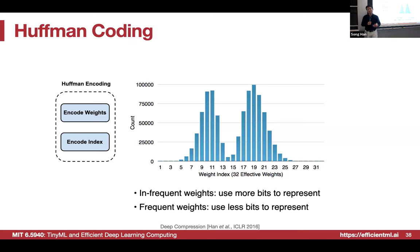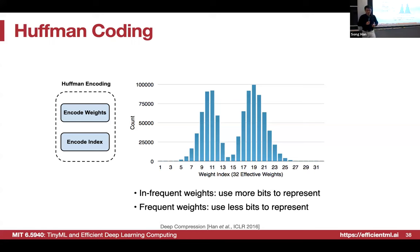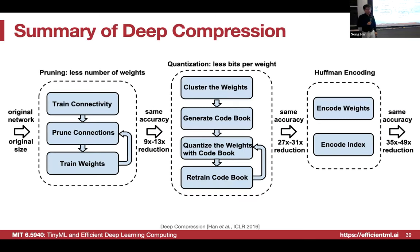We can further reduce storage using Huffman coding: assign more bits to infrequently used weights and fewer bits to frequently used weights. This is good for app deployment where you want to minimize download size. However, decoding at runtime has cost, making it not easy to implement in practice.